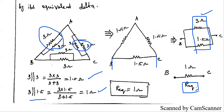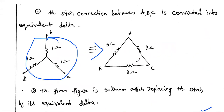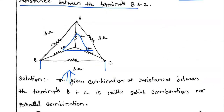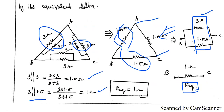If the question instead asked for equivalent resistance across terminals A and C, the reduction approach would change direction. However, since all resistance values here are equal, the answer would be the same for this particular problem. The method is: convert the inner star to delta, simplify the parallel combinations, then series, then final parallel to get the answer.